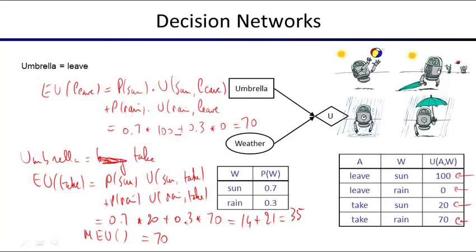Sometimes we'll write this more explicitly as MEU for the empty set. The phi inside the braces denotes that we have no information — no evidence has been observed. This is what we'll be doing, but we'll make it more complicated as we go along.